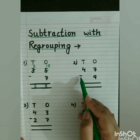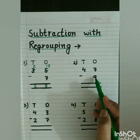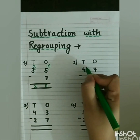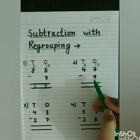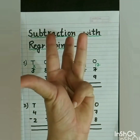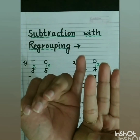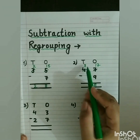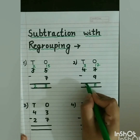Next sum: 47 minus 9. Start from the ones place. 7 minus 9 is not possible, so we borrow from tens place. 4 becomes 3 and 7 becomes 17. Now 17 minus 9: after 9, count till 17 — 10, 11, 12, 13, 14, 15, 16, 17 — that is 8. So we write 8. No number to subtract from 3, so we write 3 down. The answer is 38.